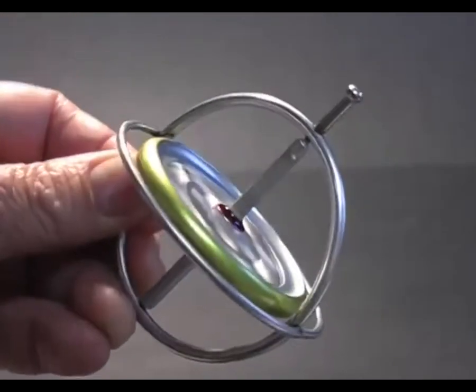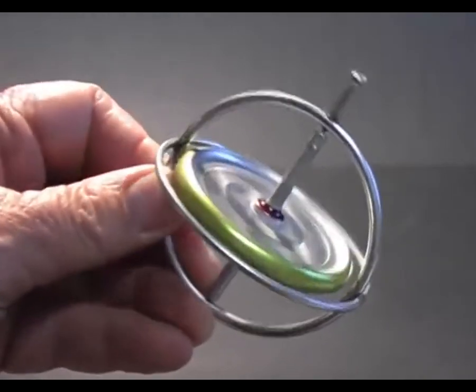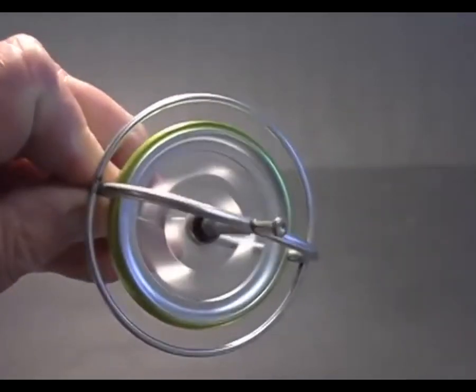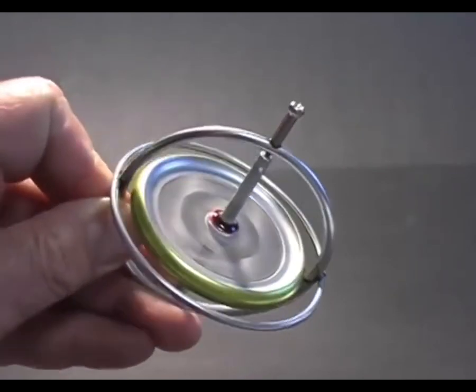The first thing I notice about the spinning gyroscope is that it resists attempts to change its position. A resistive force appears when I attempt to tilt or rotate the gyro.